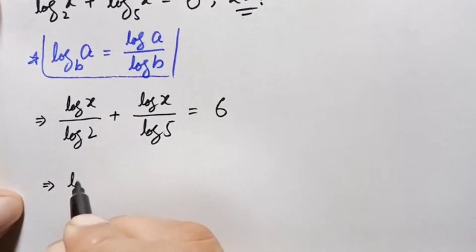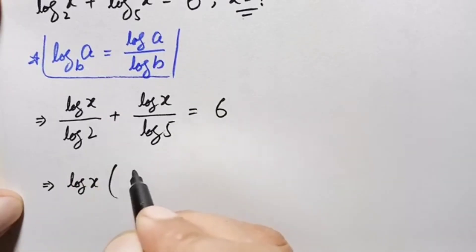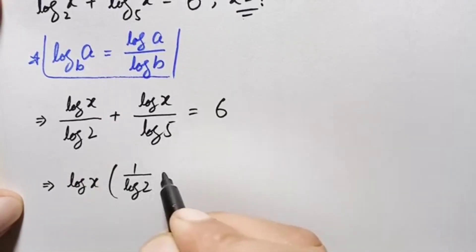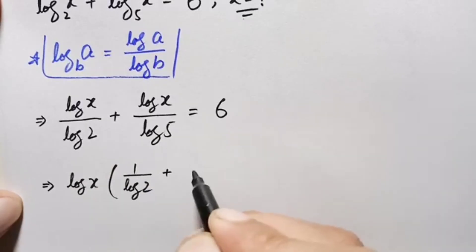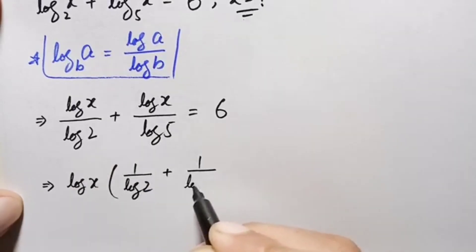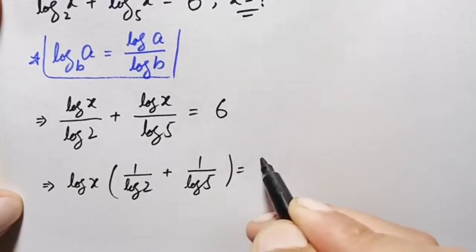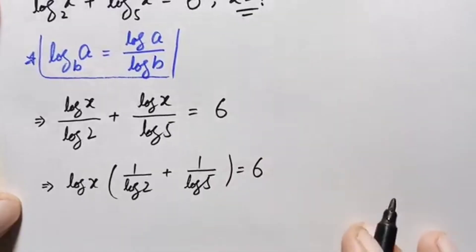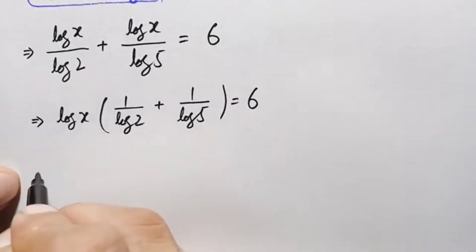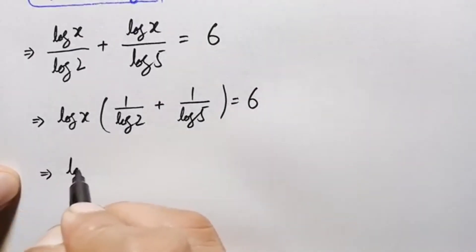Taking log of x common, this becomes log of x times (1 over log of 2 plus 1 over log of 5) is equal to 6. Now we will add these two fractions.